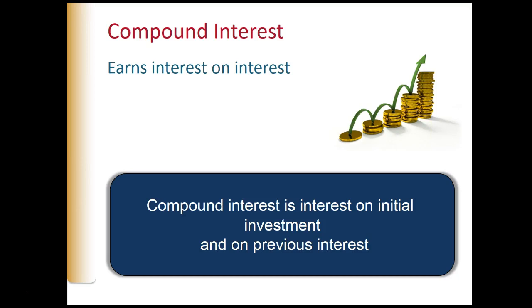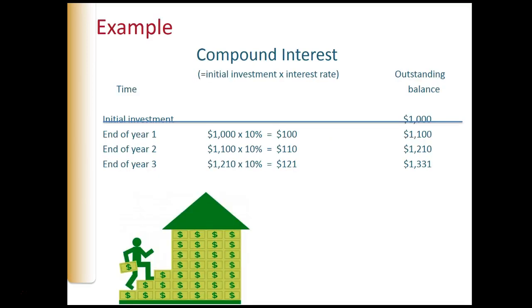Compound interest works differently. Compound interest is interest you earn on the initial investment and on previous interest. Because you're earning interest on interest, each period compound interest yields increasingly larger amounts of interest earnings, unlike simple interest which only yielded that same $100 each year. With compound interest at 10% annually, the thousand dollar initial investment grows to $1,331 at the end of three years, compared to $1,300 for simple interest. That extra $31 represents interest earned on interest.